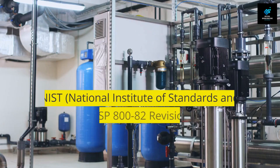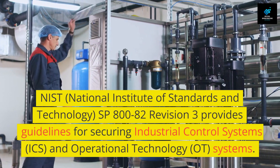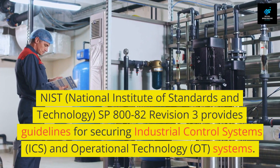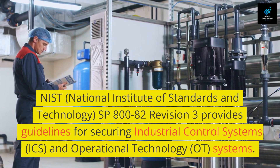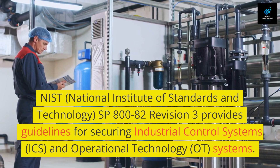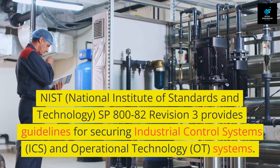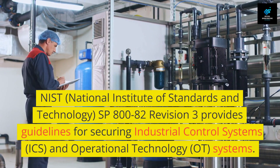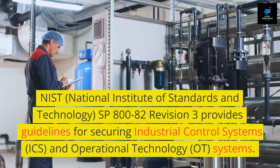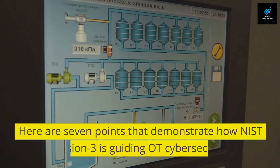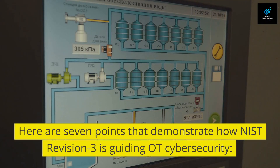NIST — the National Institute of Standards and Technology — SP 800-82 Revision 3 provides guidelines for securing industrial control systems (ICS) and operational technology (OT) systems. Here are seven points that demonstrate how NIST Revision 3 is guiding OT cybersecurity.